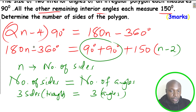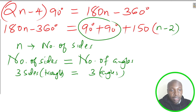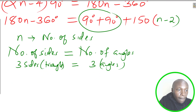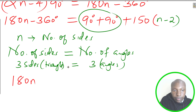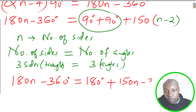This is the equation we need to solve to get n, which represents the number of sides. So: 180n subtract 360 equals 90 plus 90, which is 180 degrees, plus 150 multiplied by (n minus 2), which expands to 150n minus 300.